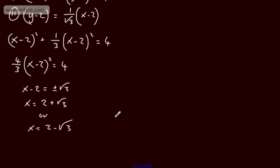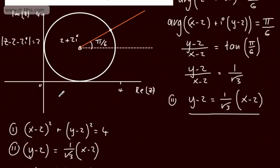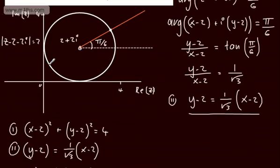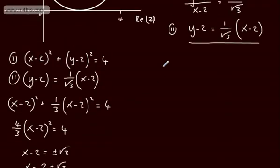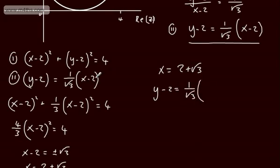Now root 3 is about 1.7. If we do 2 minus root 3, that's going to give me this value down here — so that isn't the one that we want. What we want is x equals 2 plus root 3. All we need to do now is substitute that in to find y. So y minus 2 will be equal to 1 over root 3 times — substituting in — 2 minus 2 and then root 3, which works out quite nicely. So y is going to be equal to 2 plus 1, which is 3.